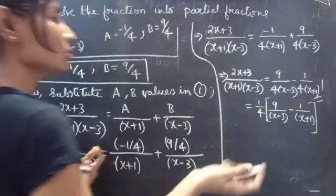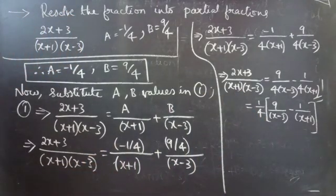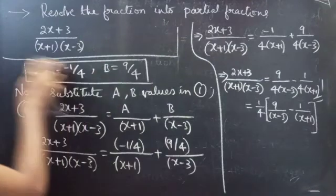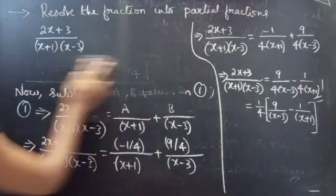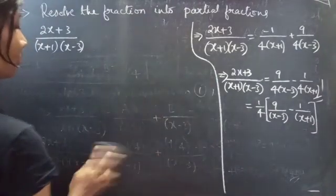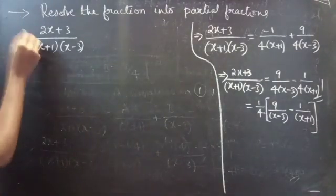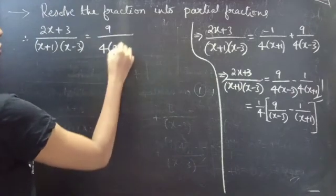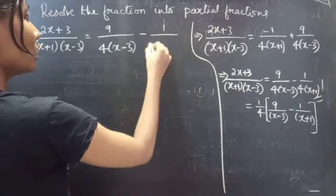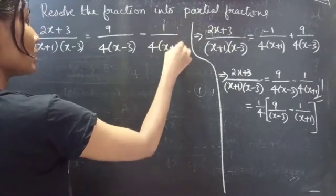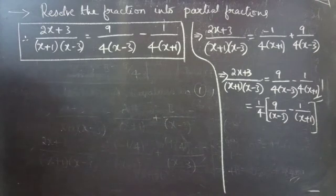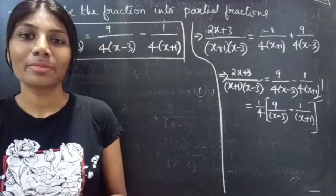Therefore, 2x plus 3 by x plus 1 into x minus 3 equals 9 by 4 into x minus 3 minus 1 by 4 into x plus 1. We have successfully resolved the proper fraction into partial fractions. This completes the problem. Hope you understand — we will see you in the next video.